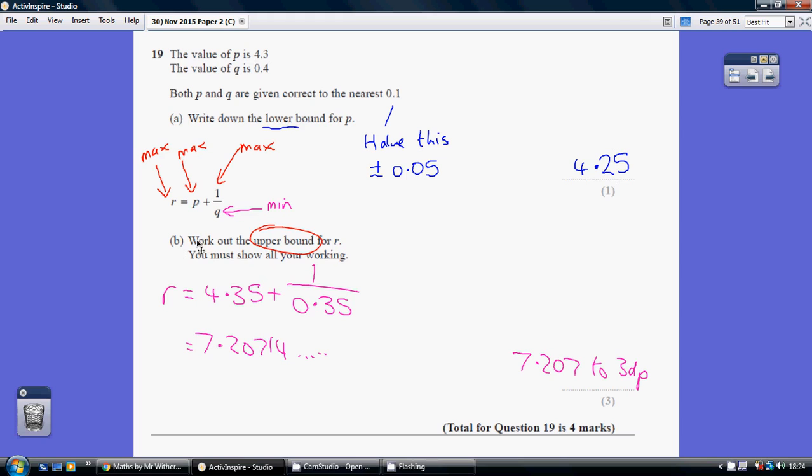Now, for part B, we've got to look for the upper bound for R. So we're trying to make R as big as possible. To make R as big as possible, P needs to be as big as possible, and also 1 over Q has to be as big as possible.